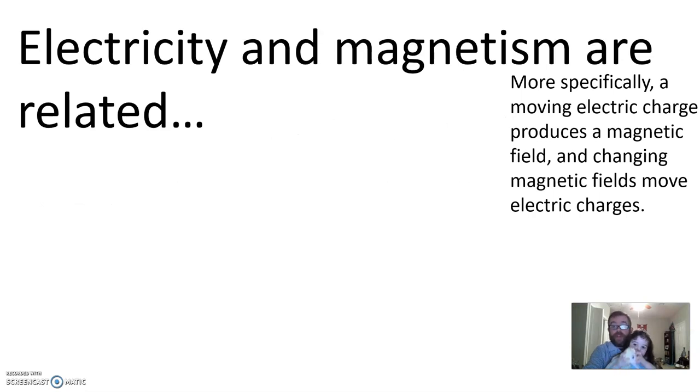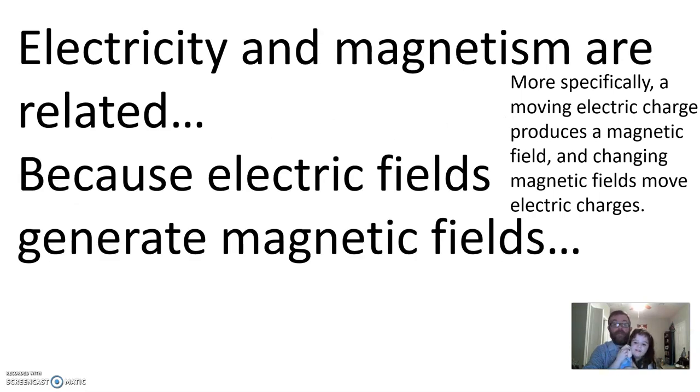Electricity and magnetism are related, because electric fields generate magnetic fields. You might have noticed this with your Chromebooks. Whenever I use my laptop, sometimes it'll get magnetically charged over on this side, or maybe that side, where the USB plugs in. And that's because the electricity running through it is creating magnetism as well.